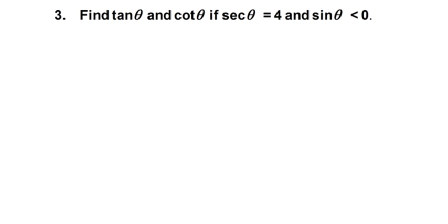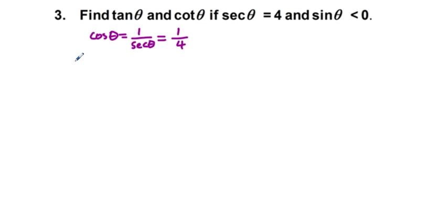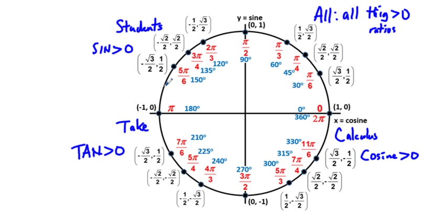Problem three: find tangent theta and cotangent theta if secant theta is four and sine theta is less than zero. Since cosine equals the reciprocal of secant, cosine theta equals one-fourth. With cosine positive and sine negative, we're in quadrant four.